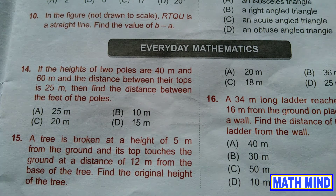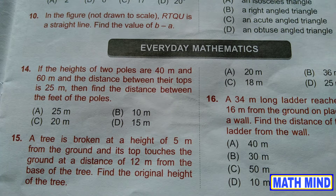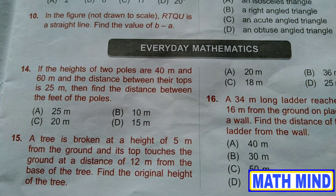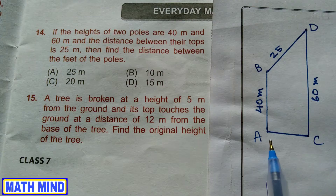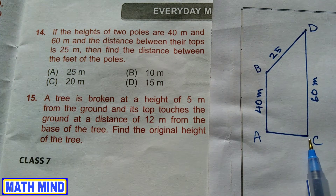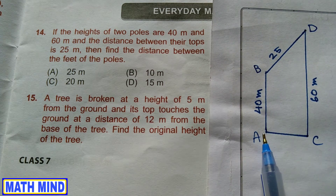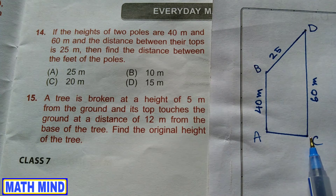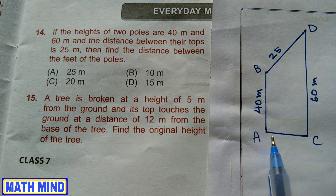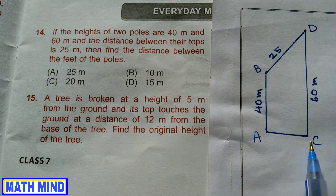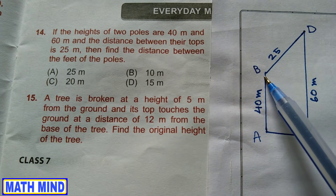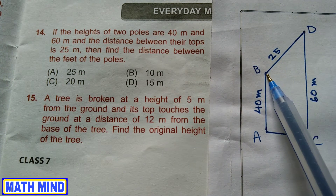Question number 14. The heights of two poles are 40 meters and 60 meters, and the distance between their tops is 25 meters. Find the distance between the feet of the poles. Let AB and CD be two poles, where AB is 40 meters and CD is 60 meters. We have to find the distance between their feet, and it is given that the distance between their tops is 25 meters.